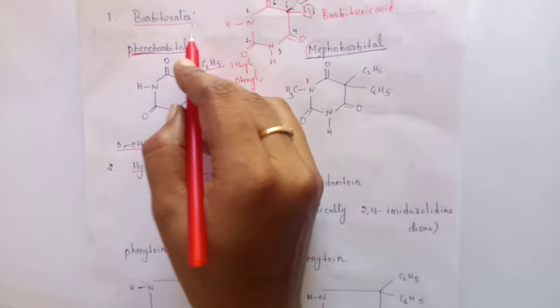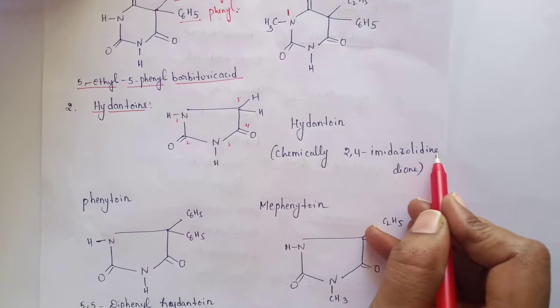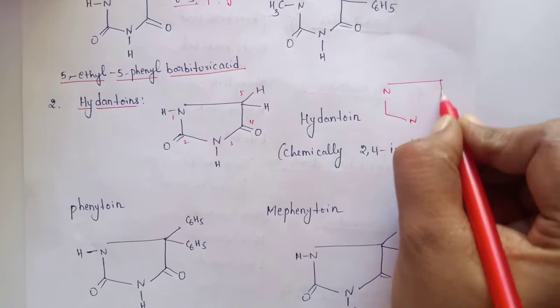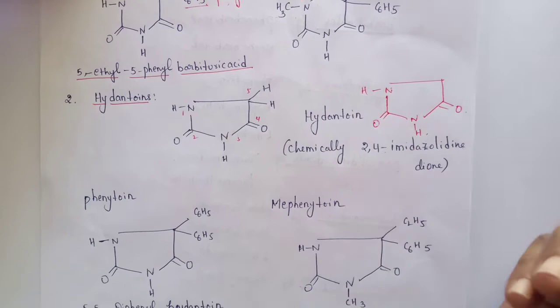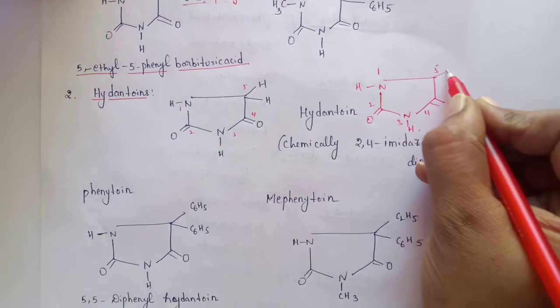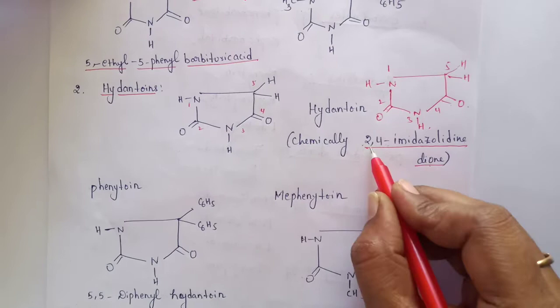Coming to the second class of compounds — hydantoins. Hydantoin is chemically known as 2,4-imidazolidinedione. It is a 5-membered ring possessing an imidazoline structure with 2 ketones. The nitrogens are satisfied with hydrogens. Numbering goes 1, 2, 3, 4, 5. It also possesses 2 hydrogens. We can name it as 2,4-imidazolidinedione, commonly known as hydantoin.